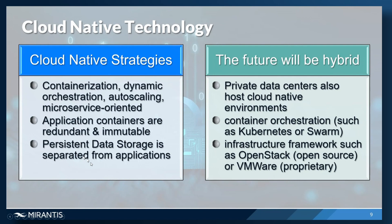Persistent data storage is separated from the applications themselves. It's also dynamically provisioned, which makes data storage mobile — it can be placed anywhere and moved and re-referenced dynamically. The future is expected to be hybrid, with hyperscalers and private data centers both hosting cloud-native environments. Container orchestration is key — containerization plus dynamic orchestration — with Kubernetes being dominant and Swarm making a comeback. And you need an infrastructure framework like OpenStack or VMware to provision the servers the containers run on.